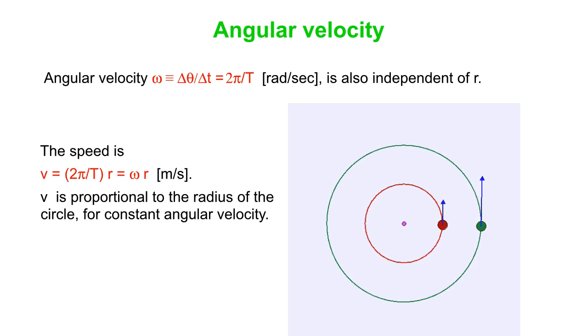Now, note that the speed is 2π over T times R. In other words, 2πr over T. That is proportional to the radius of the circle, whereas the angular velocity is independent of the radius.